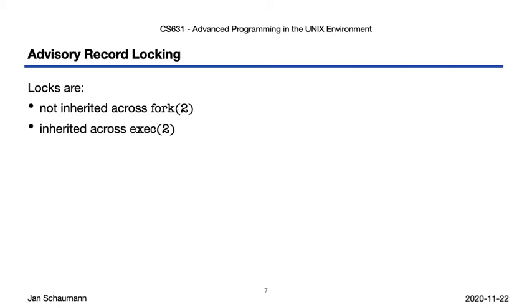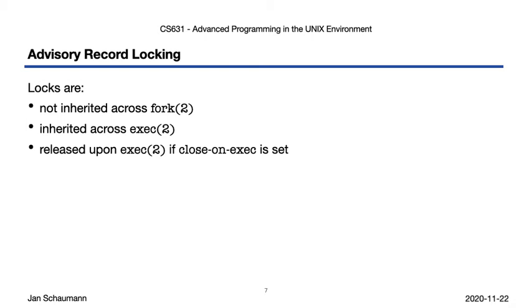When we call exec, however, the lock remains in place. That too seems logical. But we do have an option to prevent this: if a file descriptor had the close-on-exec flag set, then it is closed and no lock is retained when we call exec. Likewise, all locks on a file descriptor are released when the process terminates.